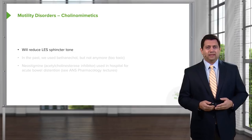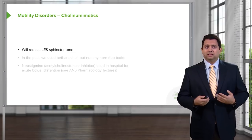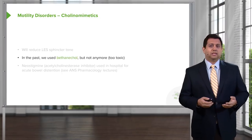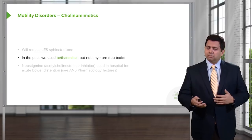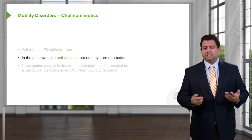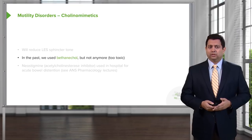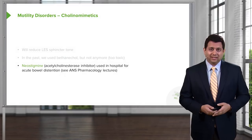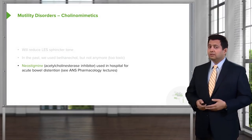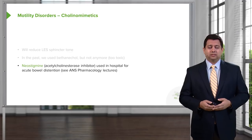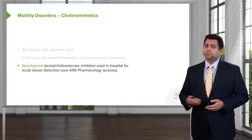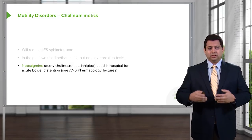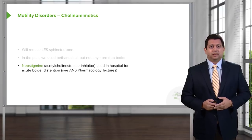Let's start off with the cholinomimetics. Cholinomimetics lower the sphincter tone of the lower esophageal sphincter. In the past, we used drugs like bethanecol, but not anymore because bethanecol tends to be toxic and doesn't really work as well as we had hoped. Neostigmine, which is an acetylcholinase inhibitor, is often used in the hospital for acute bowel distension. For further information on this agent, I encourage you to take a look at our autonomic nervous system pharmacology lectures.